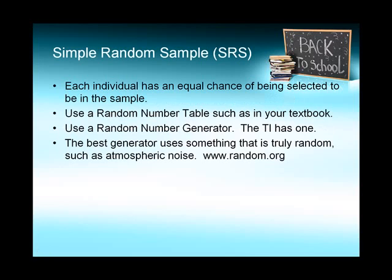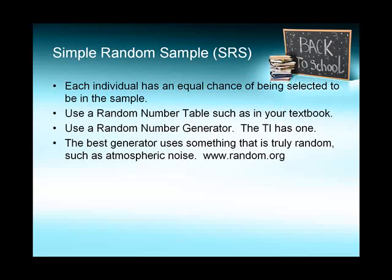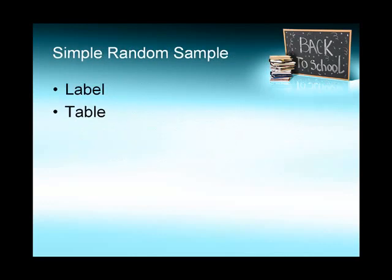You could use a random number table such as in your book or a random number generator. The TI has one, but the best uses something that's truly random such as atmospheric noise. There are two steps in choosing a simple random sample: you label and then you table.